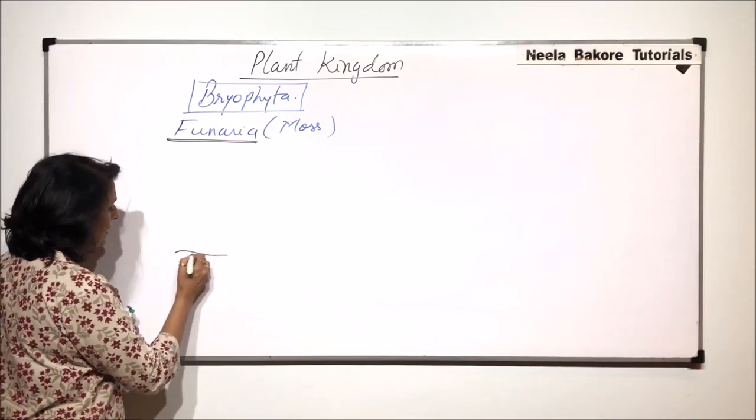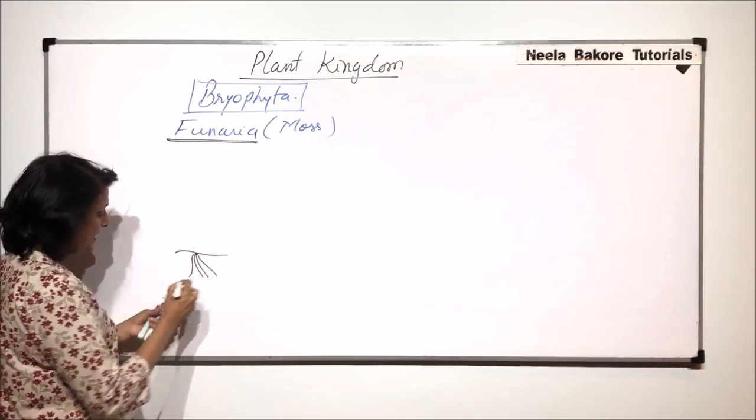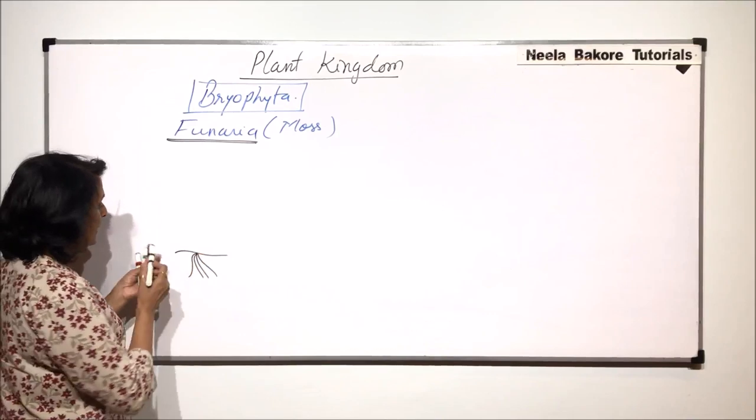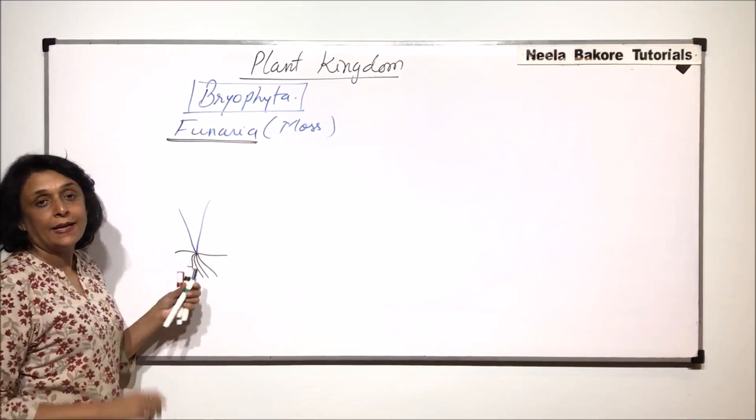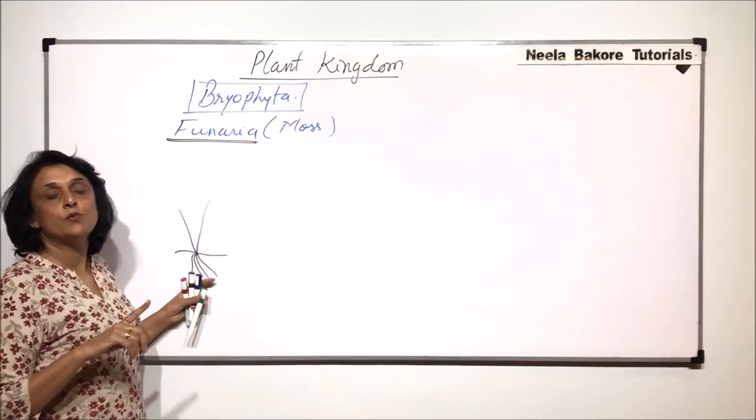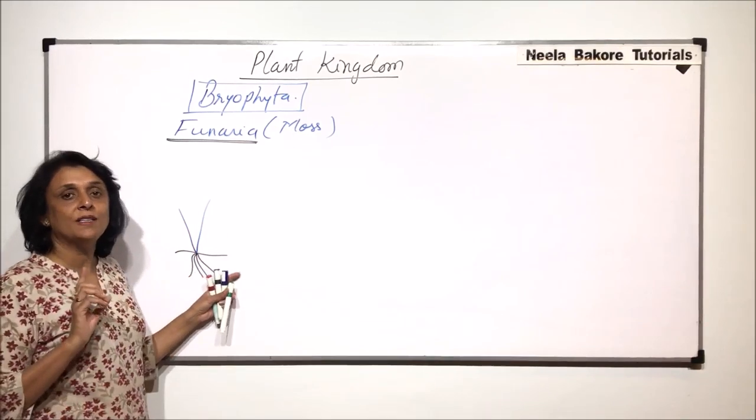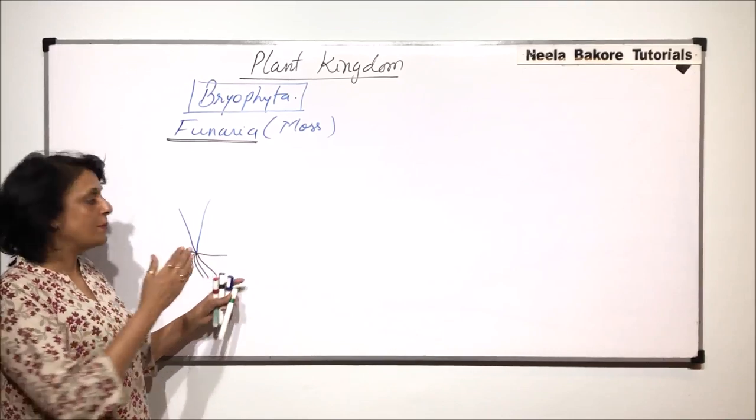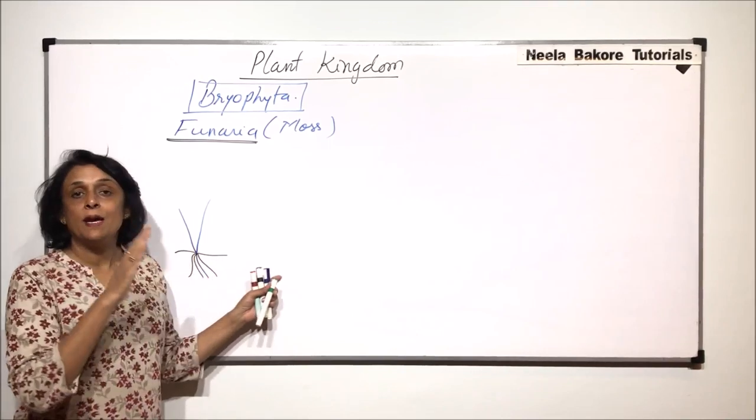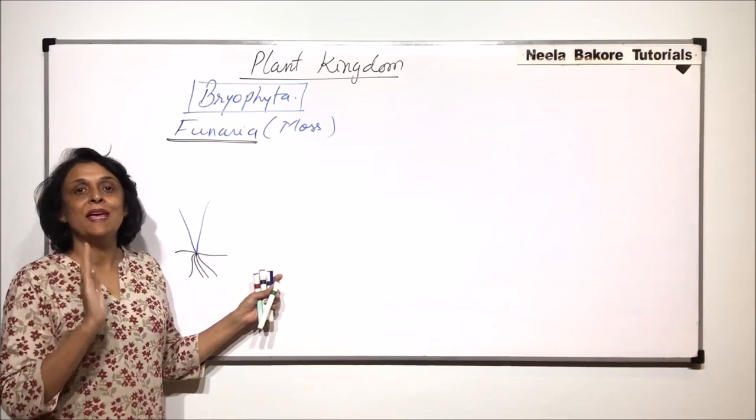When we make the gametophyte, we made these rhizoids and there were two branches. One is a male branch and the other is female branch. The main branch which is formed first is normally the male branch, but after fertilization, the female branch which is on the side becomes erect and becomes the main branch.